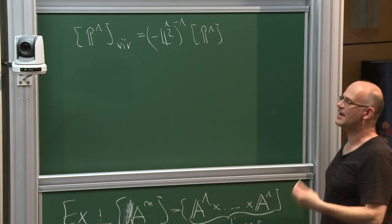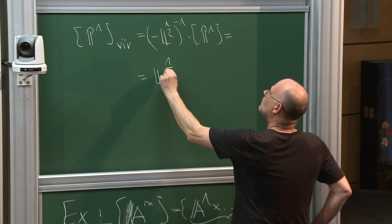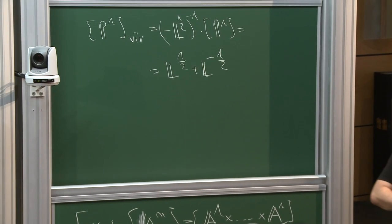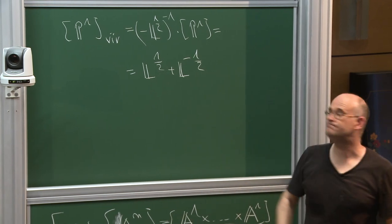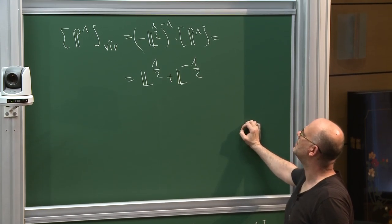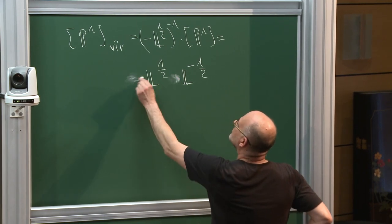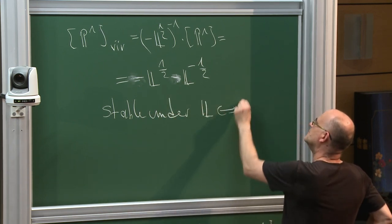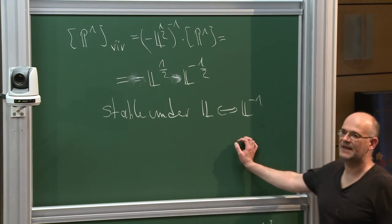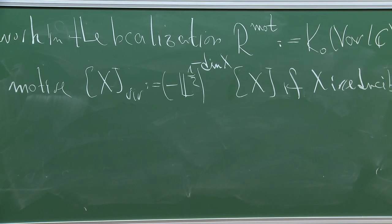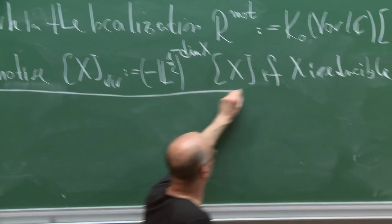The important feature of the virtual motive is that it is stable under switching L and L^{-1} — it is symmetric. That's the main feature: the virtual motive makes things more symmetric. Now, we must be careful — it might be that in working with this ring we are talking about the zero ring.